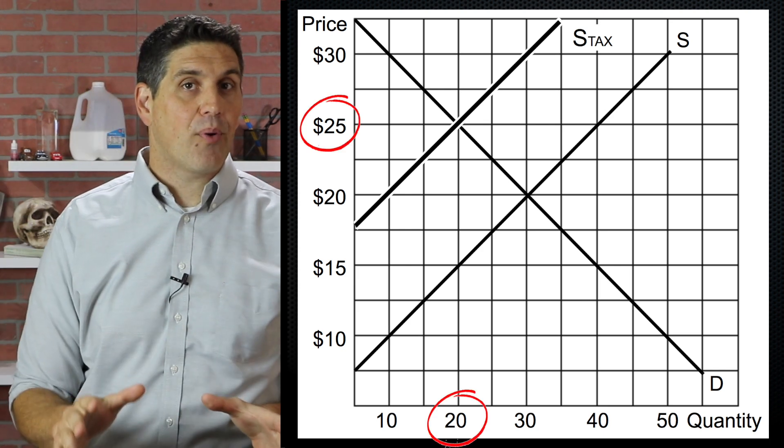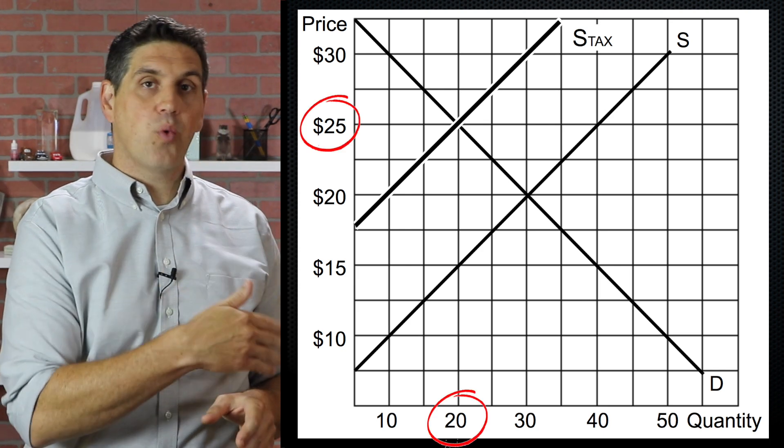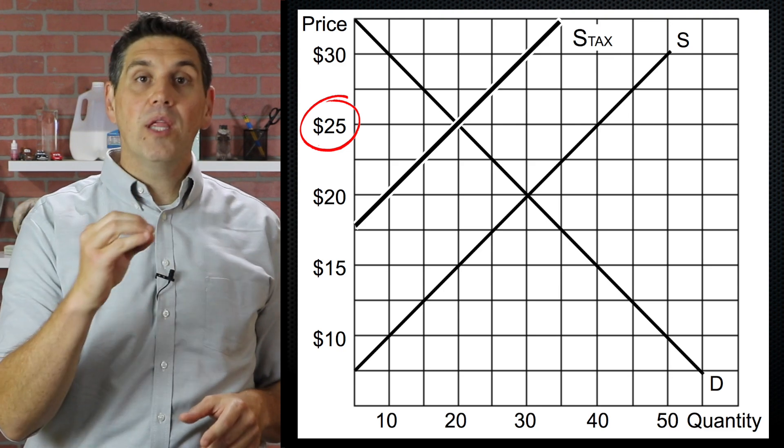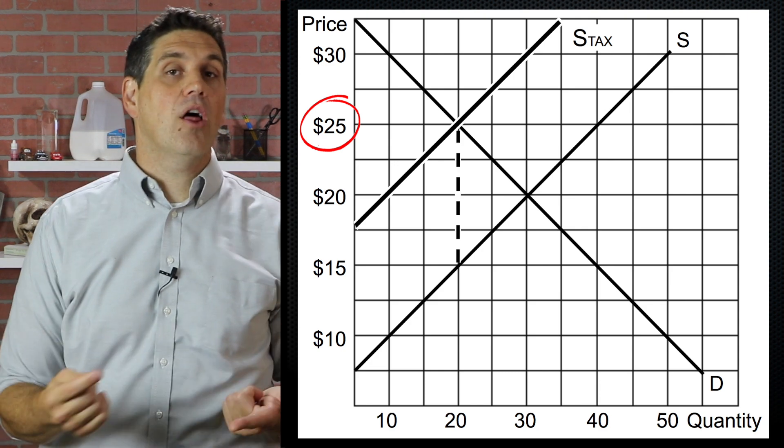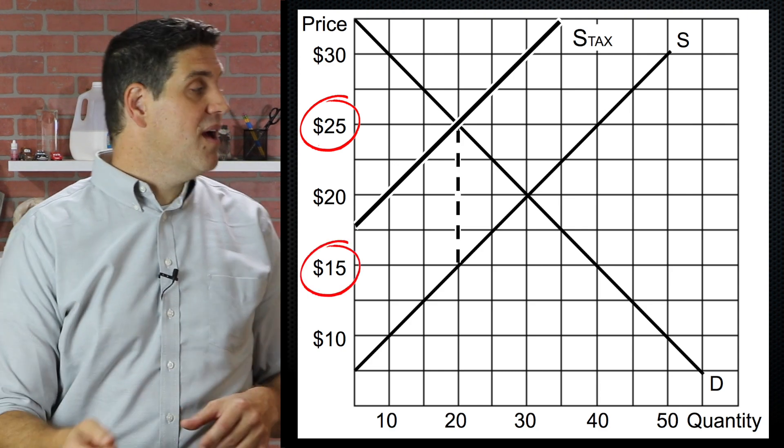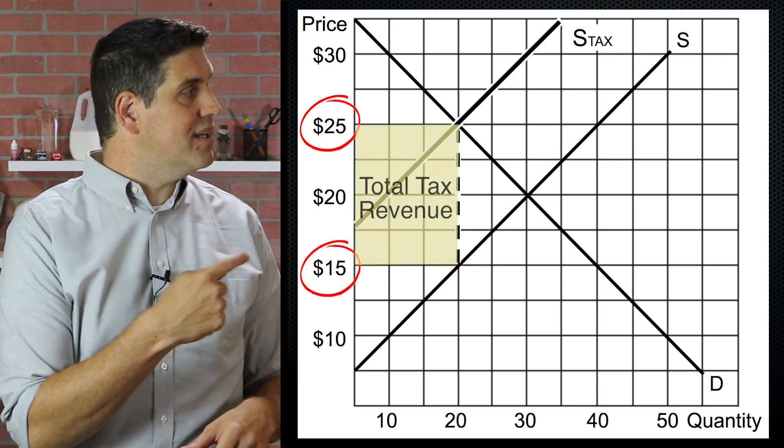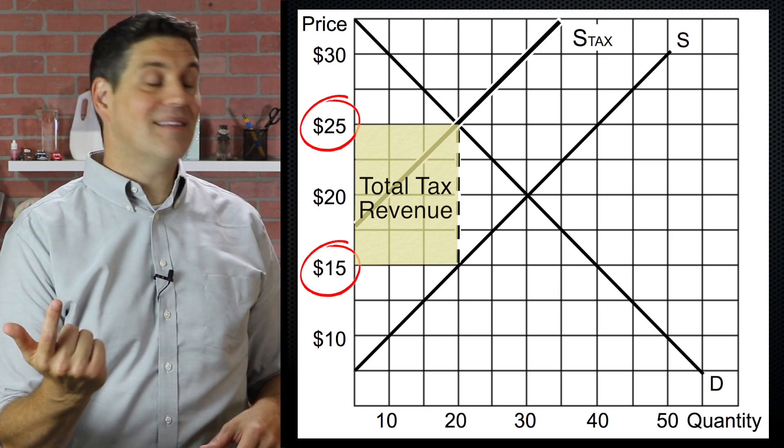So now the new equilibrium price is $25 and the quantity is 20 million. But that price of $25 is only what consumers are paying. It's not what producers receive. Because of the $10 tax, producers only get to keep $15. So that vertical distance times the quantity, that's the tax revenue.